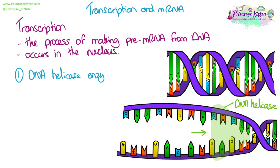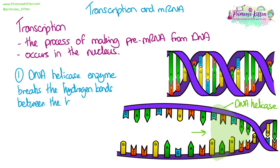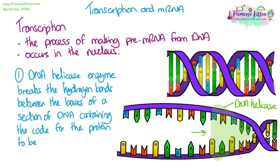Step one involves the enzyme DNA helicase. We've seen this enzyme before and we should know that it breaks the hydrogen bonds between the bases on the strand of DNA to separate them. Remember that hydrogen bonding between the bases is not a condensation or hydrolysis reaction — it's not a covalent bond, so we're just saying we break the hydrogen bonds. And it only does this on the section of DNA that contains the code for the protein that we want to be synthesized. So we're not unwinding the entire DNA strand like we do with DNA replication — we're just opening up a small section that contains the sequence of nucleotides we need, which codes for the protein that we would like.